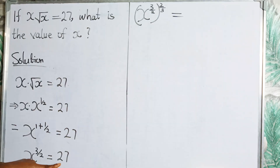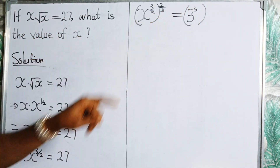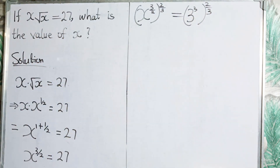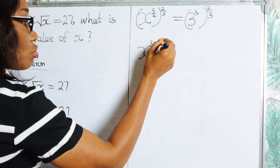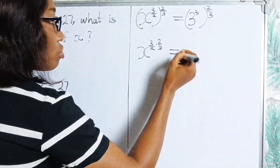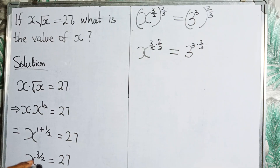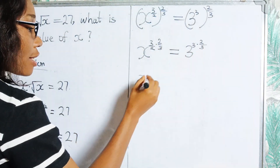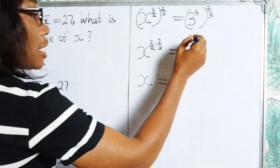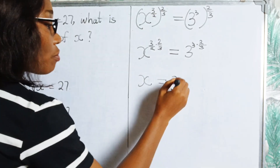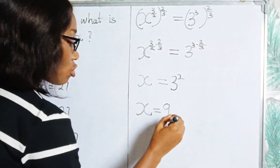On the right side: 27 is the same thing as 3 raised to power 3, and we raise that to the power of 2 over 3. So we have x raised to power 3 over 2 times 2 over 3, equal to 3 raised to power 3 times 2 over 3. Multiplying out the left side gives x raised to power 1, which is just x. On the right side, the 3s cancel, leaving 3 raised to power 2. So x equals 3 raised to power 2, which is 3 times 3. Therefore x equals 9. That is the first method.